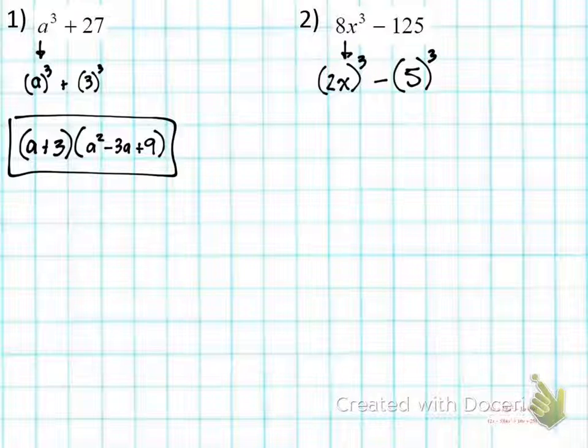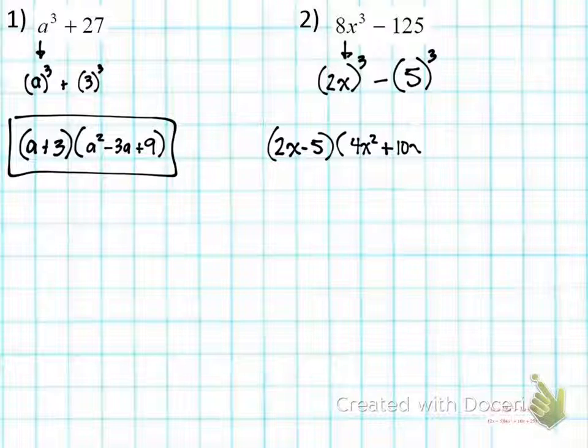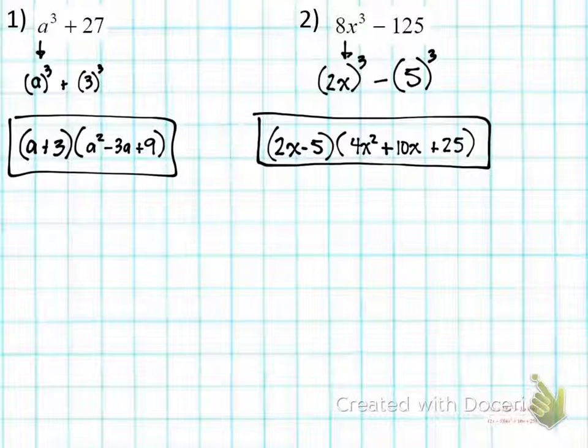So we're going to write this down using this pattern. We got a minus b, so it's just going to be 2x minus 5. Open parentheses. We got a², in this case 2x squared is 4x². Then we have plus ab. 2x times 5 is 10x, we're going to do plus 10x. And then we got plus b², which is going to be plus 25. And that's it. You box your answer. Make sense?